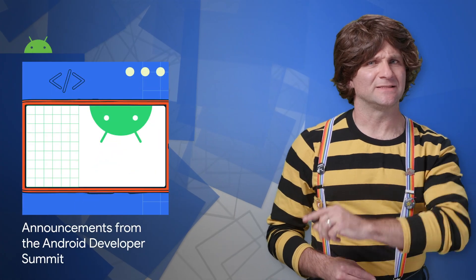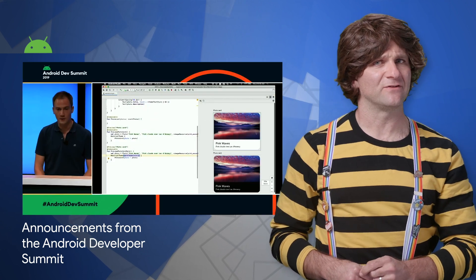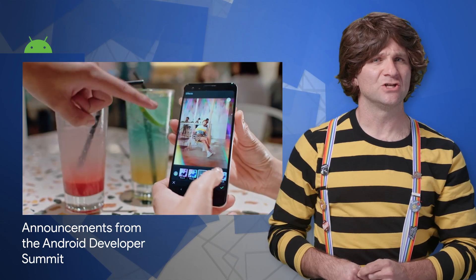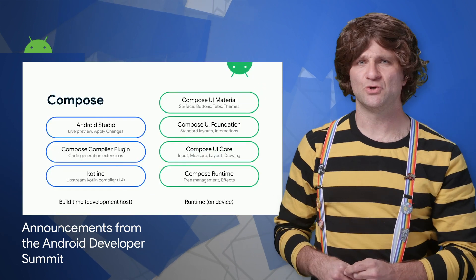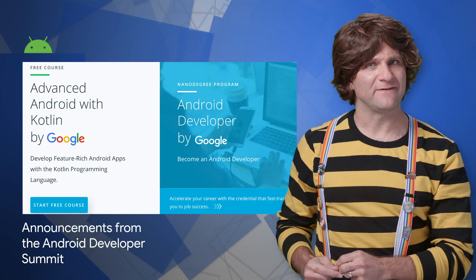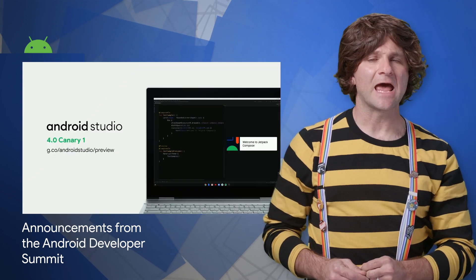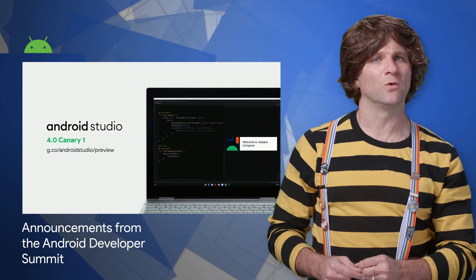The Android Developer Summit gave us more exciting announcements than you could shake a flukie at. Highlights include new Jetpack libraries for everything from better performance benchmarking to easier camera implementation, a new Compose UI library for creating beautiful native apps, a new advanced Kotlin course on Udacity, and the first Canary build of Android Studio 4.0.